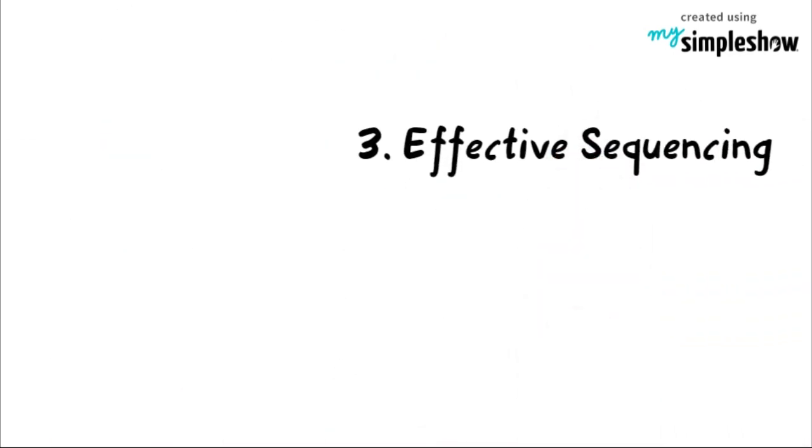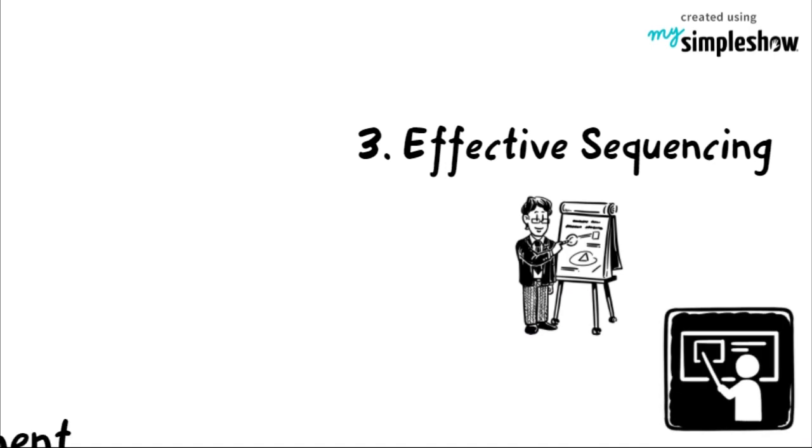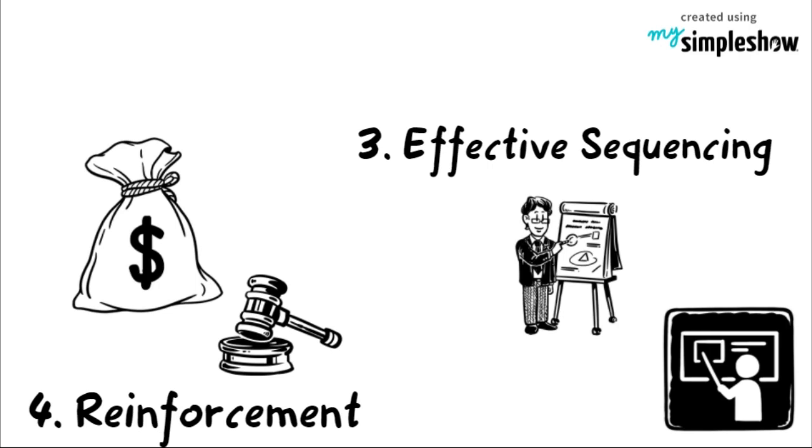Three, effective sequencing. No one sequencing will fit every learner, but in general the lesson can be presented in increasing difficulty. Fourth is reinforcement. Rewards and punishments should be selected and paced appropriately.